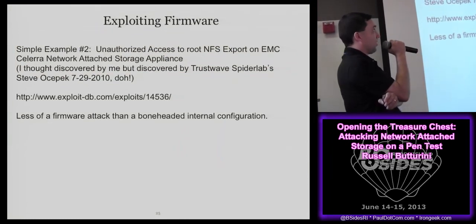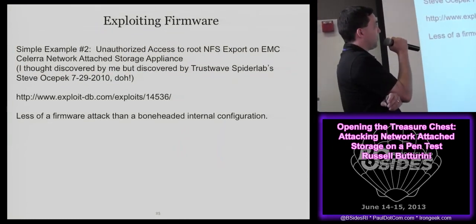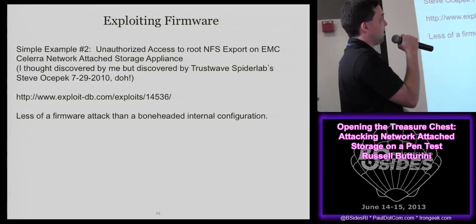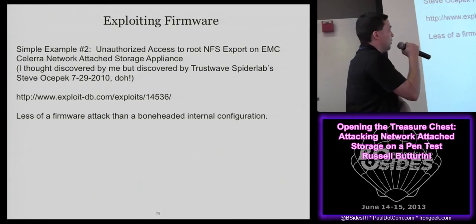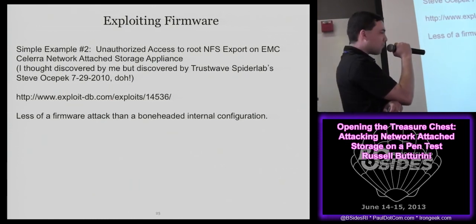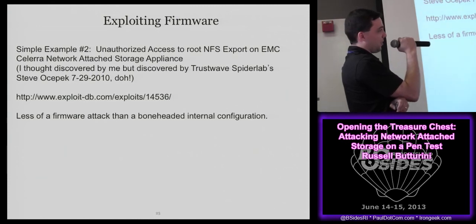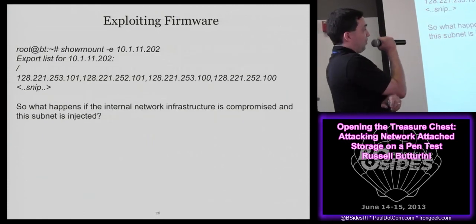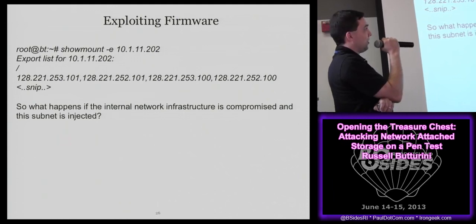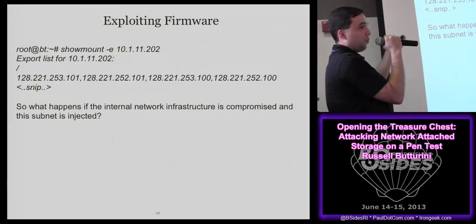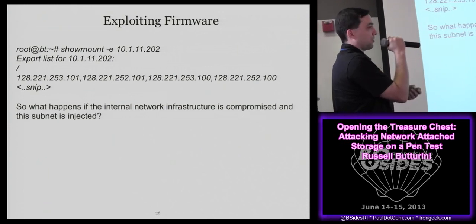Another example: unauthorized access to root NFS export on EMC Isilon - big time file shares. I found this in 2010. It's less a firmware attack and more a configuration issue. There are these IPs owned by EMC that you can look up via WHOIS - they're used for internal box communication. But the root of the file system is exposed to those IPs. So what happens if somebody gets into the switch, adds that VLAN, and injects that subnet into the network? You get root access - not root OS access, but root of all your file shares, which is still all your file shares and that's probably bad.